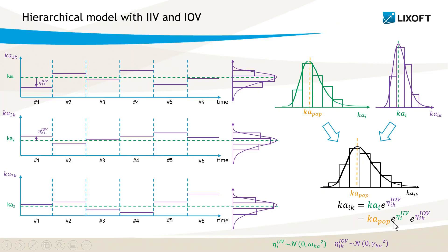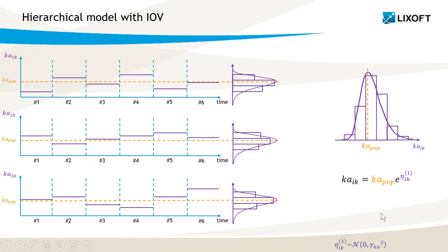The variability at the ID level represents the additional variability between individuals that is common across occasions. Sometimes it might be difficult to estimate the typical individual values across time in addition to the IOV, and so it is possible to consider only IOV and no IIV. This is especially the case if there are few occasions per individual, if the population is very homogeneous, or if most of the variability is explained by covariate effects.